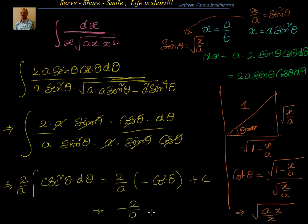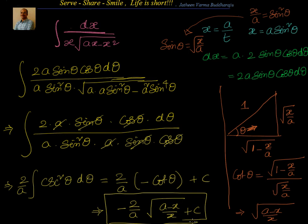So our final answer is minus 2 by a times square root of (a minus x) by x plus c. That's our answer for the integration of 1 by x into square root of ax minus x squared. You should try it also with x equal to a by t. Please let me know your feedback — I'll catch you again with one more interesting example. Thanks for your time and support, bye for now.